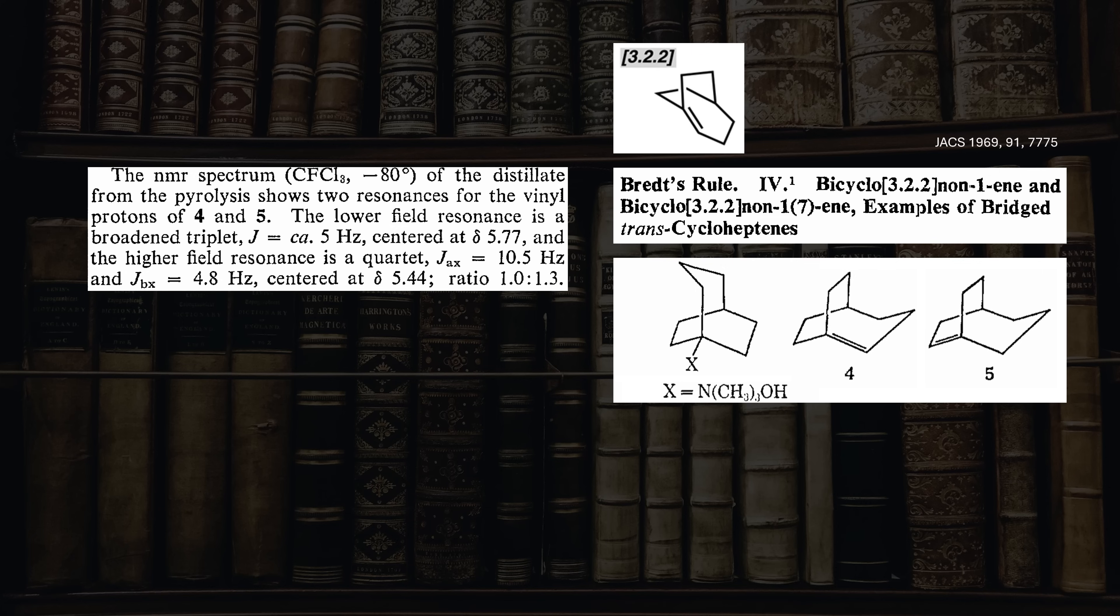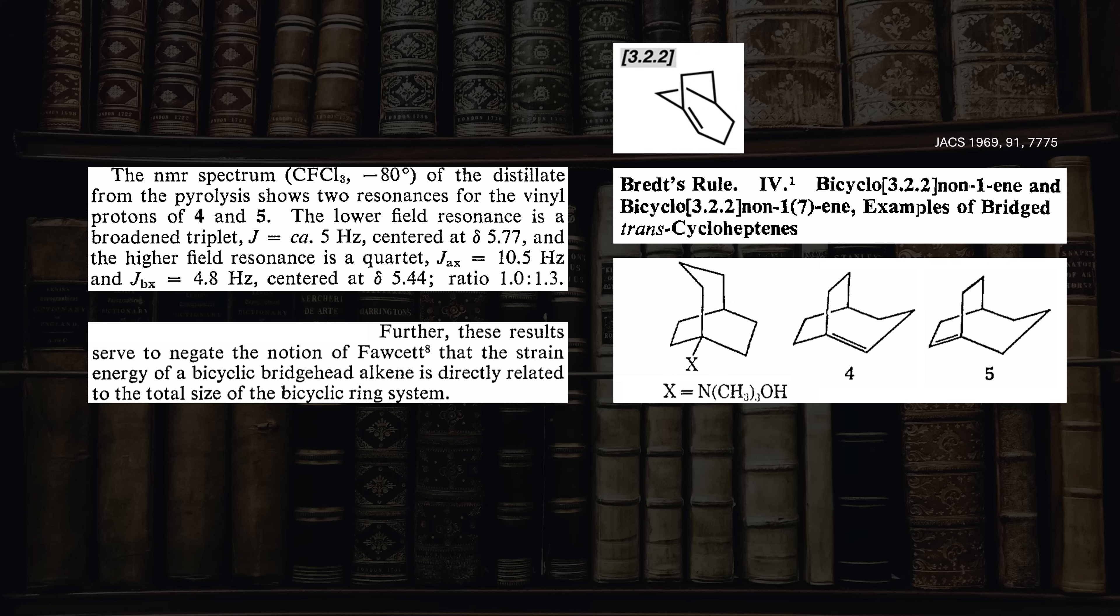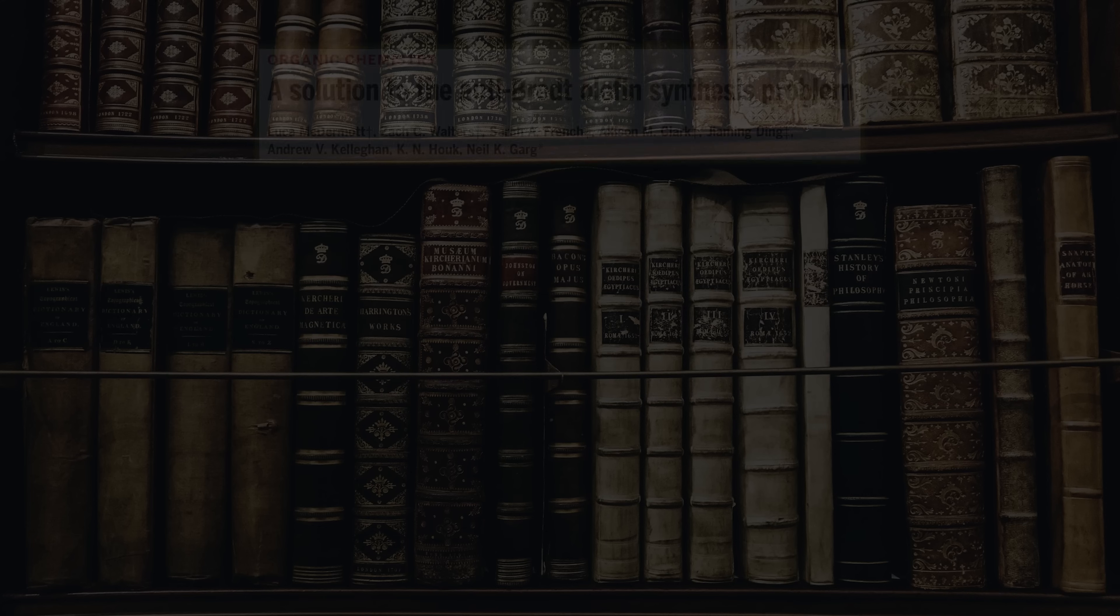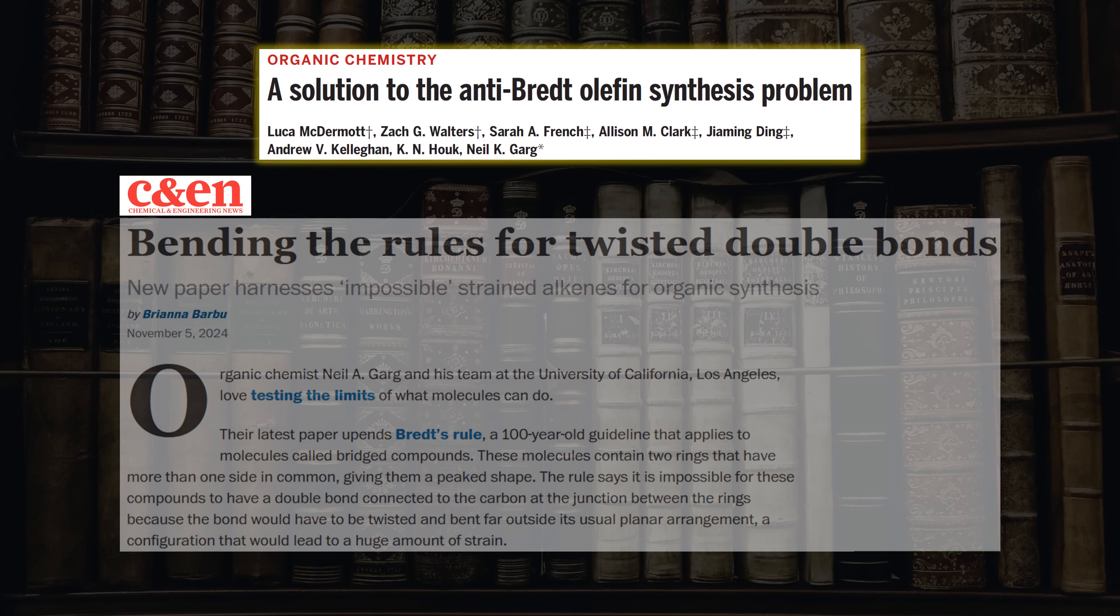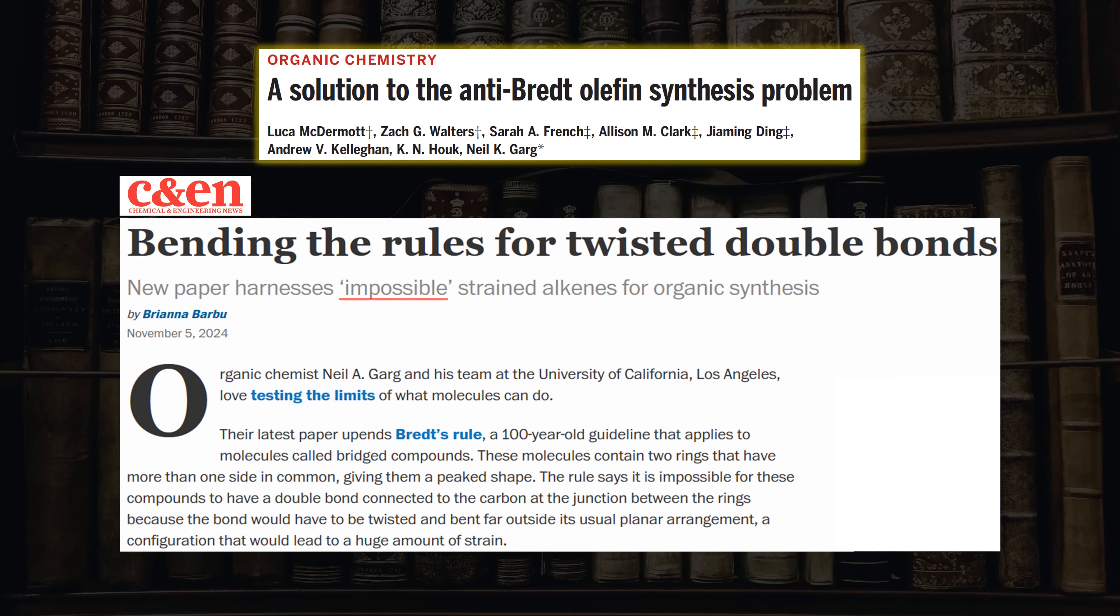Evidently using the total ring size S as a proxy for stability also doesn't work every time. This means claims of impossible anti-Bredt olefins should be taken with a big spoon of salt. The question is not if they can be made, but rather if there are more practical approaches and any synthetic utility. We might not be satisfied with having to incinerate our molecules to get crappy yields.